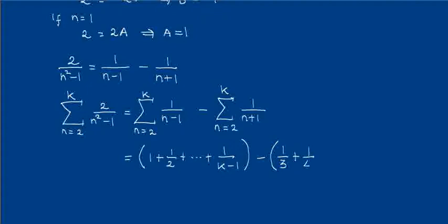1 over 4, up to the last term when n equals k, so up to 1 over k plus 1. But before 1 over k plus 1, one term before will be 1 over k, and the previous term of that will be 1 over k minus 1.